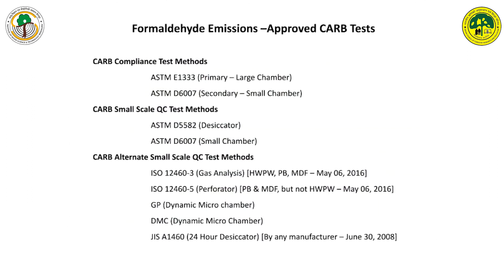For exporting products to North America, CARB and EPA tests must be followed. The compliance tests are the ASTM large chamber and ASTM small chamber. For small-scale quality control, the ASTM D5582 desiccator carries high significance along with the small chamber. For factory production quality control, the ISO gas analysis, ISO perforator, dynamic microchambers, and the Japanese desiccator test are among the approved list of production quality control tests.